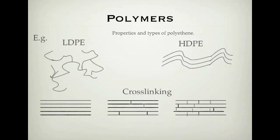Let's look at some of the properties and uses for polymers. Two interesting properties relate to branching. First, LDPE — low-density polyethene — has lots of branches, which means you can't pack the chains very close together, giving it a low density. HDPE — high-density polyethene — has a straight chain of carbons with no real branching, so these chains can be stacked really close together, giving a high density.